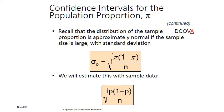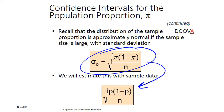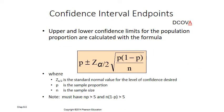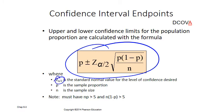Here, sigma-p is pi times (1 minus pi) over n, and we estimate this with sample data. I wrote the wrong formula in the previous slide — I wrote pi(1 minus pi), but the correct formula uses p(1 minus p) over n. So the formula is: Z alpha by 2 times the square root of p(1 minus p) over n. Here, p is the sample proportion and n is the sample size.